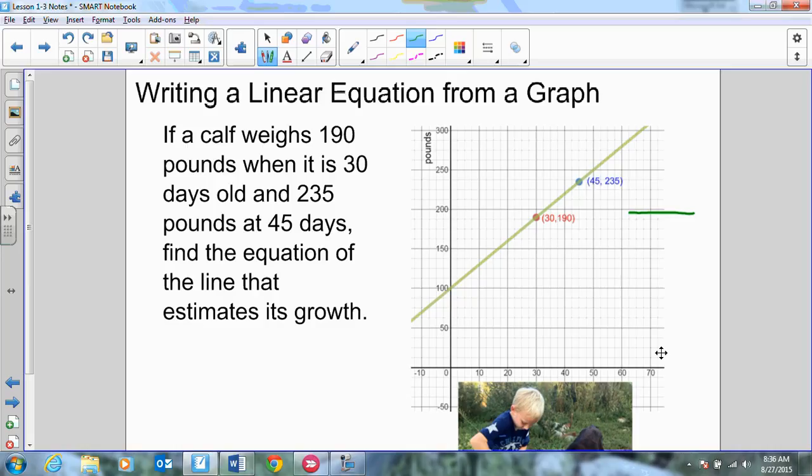So when we look at an ordered pair, is it xy or yx? xy, right? So which one's going to go on top? If our slope is the change in y over the change in x, which ones do we want on top? Yep, 190 and 235, okay? So if we start with the 190, and we take away 235, then we've got to start with the 30 and take away the 45, okay?